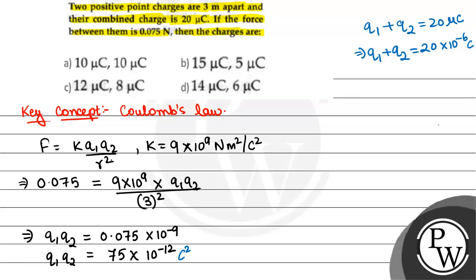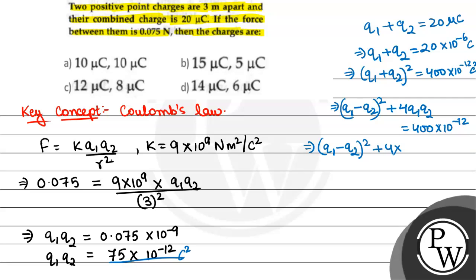Now, Q1 plus Q2 the whole square is equal to 400 into 10 to the power minus 12 Coulomb square. So from here we can write it as (Q1 minus Q2) the whole square plus 4 Q1 Q2, that will be equal to 400 into 10 to the power minus 12.